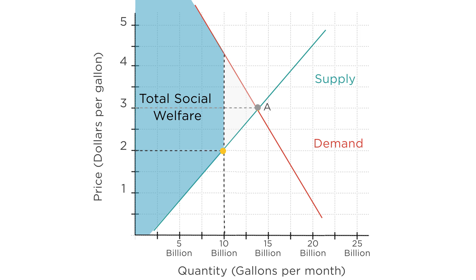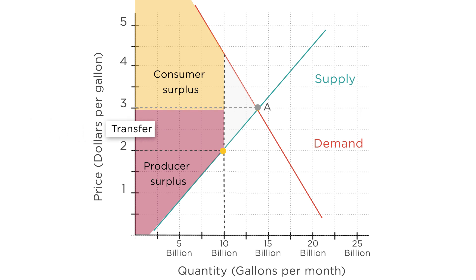Two different things are going on here. First, there was a transfer from producers to consumers. Producers used to have this rectangle as part of their surplus. After the price change, this rectangle has become part of the consumer surplus. This transfer happens because the government mandated a lower price: producers get less for their gas, lowering their surplus, and consumers don't have to pay as much, increasing their surplus. Under our definition of total social welfare, this is neither good nor bad — though in reality, you may feel differently if you own stock in ExxonMobil. We'll talk about this more in the next lecture.